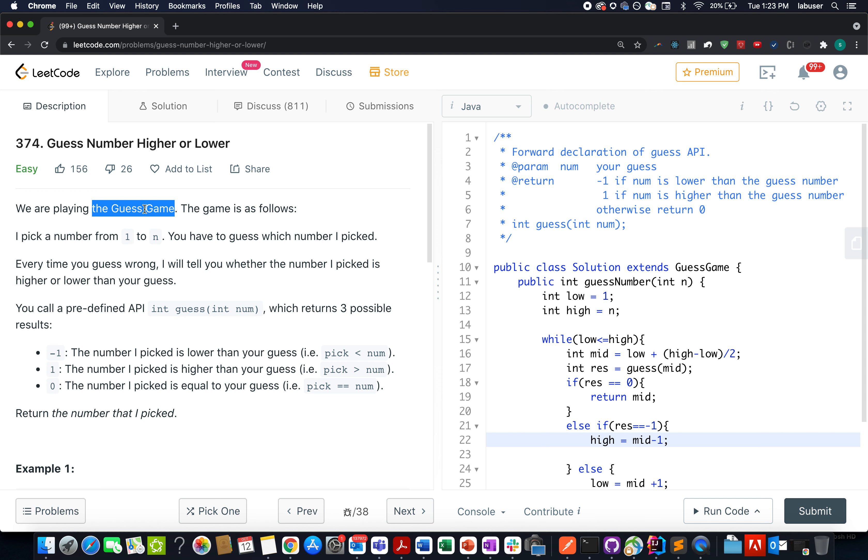The game is as follows. I pick a number from one to n, both inclusive. You have to guess which number I picked and every time you make a wrong guess, I will tell you whether the number picked is higher or lower than your guess. And what is the interface for telling you this information? There is a predefined API for this named guess. It accepts in a number.